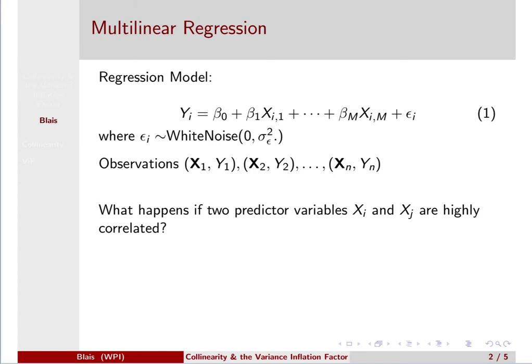So first, let's recall our multilinear regression model. We have response variable Yi, and this is going to be written as a linear combination of the predictor variables X1 through Xm. And this equation represents the i-th case. And then we have a white noise term epsilon i, where the white noise terms are all mean zero and variance sigma epsilon squared.